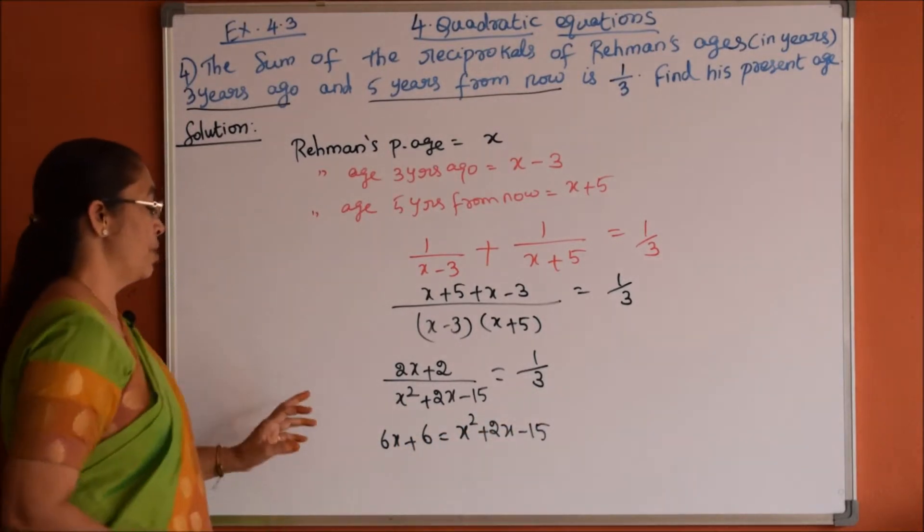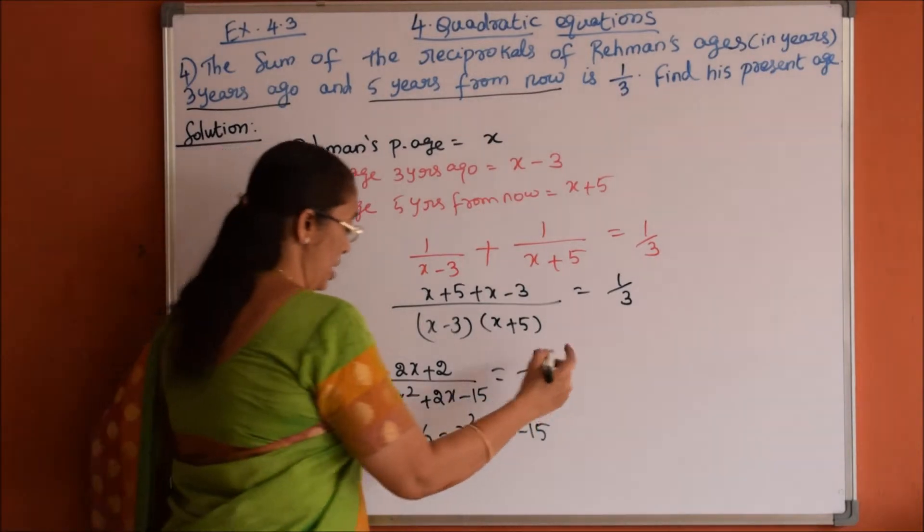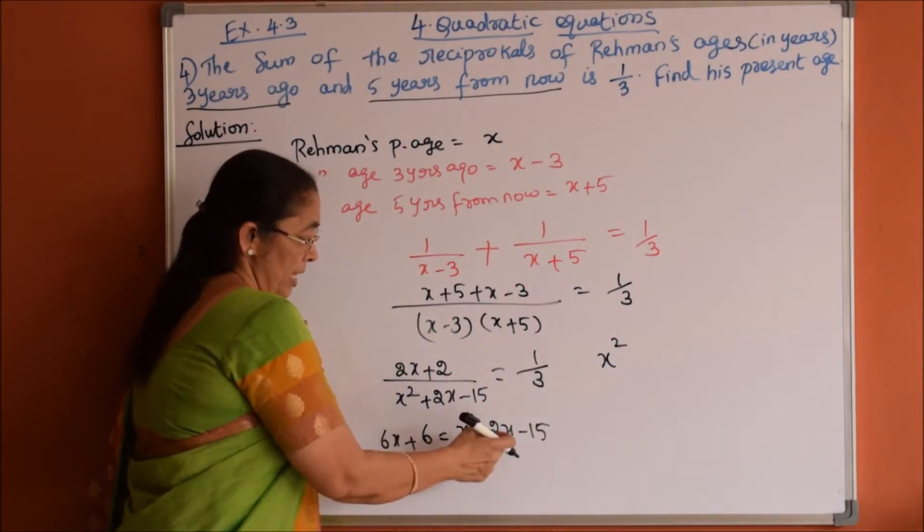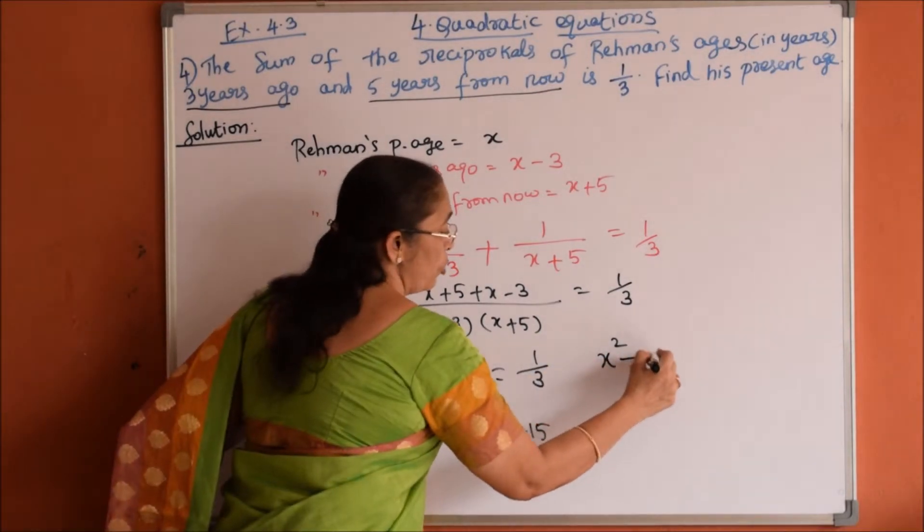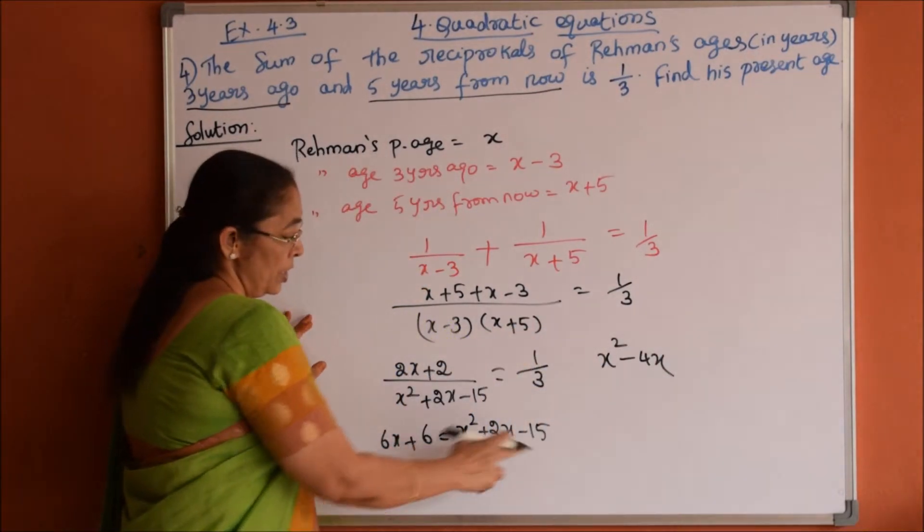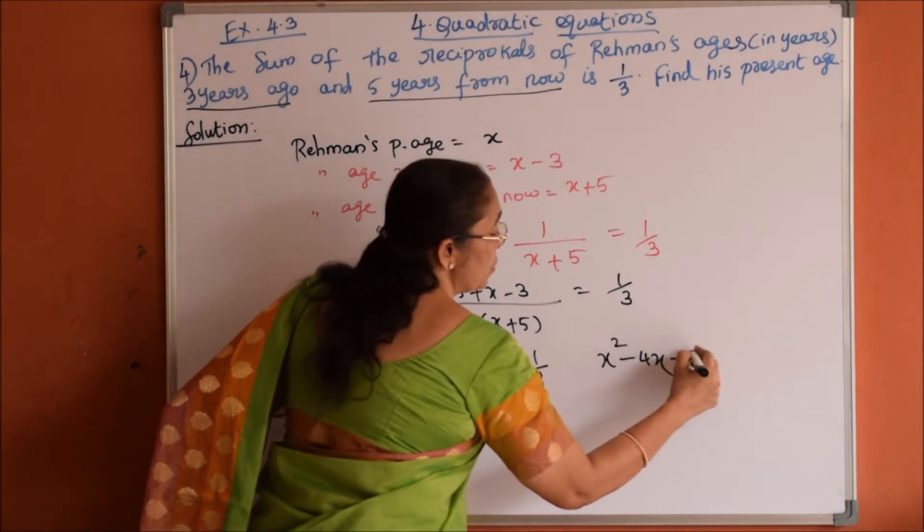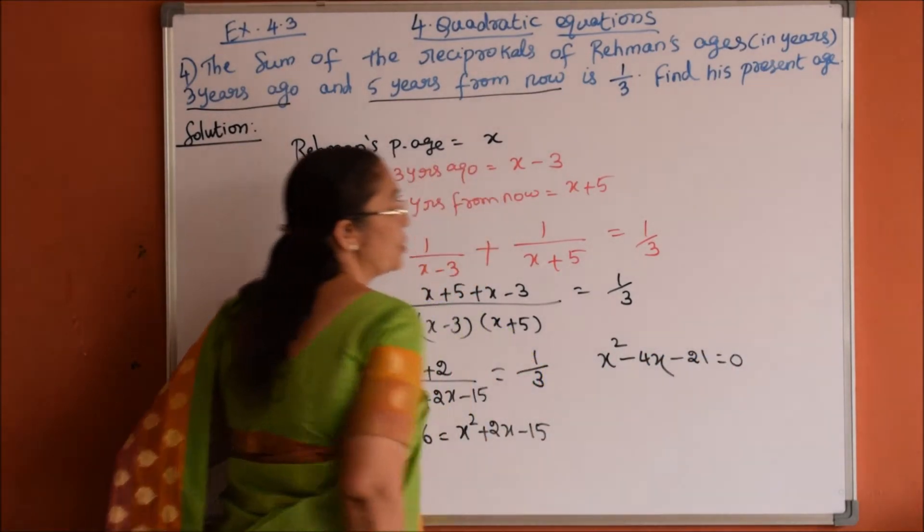Now we will arrange it in the form of quadratic equation, that is x square. 6x I will take this side, 2x minus 6x is minus 4x. Next here minus 15, minus 15 minus 6 is minus 21 equals 0.